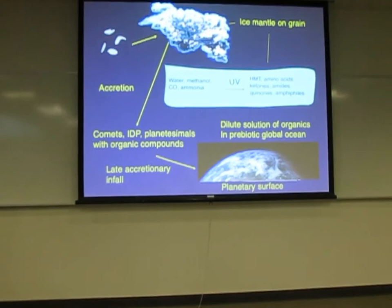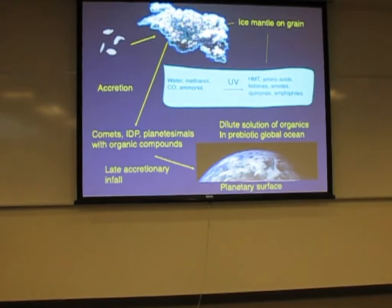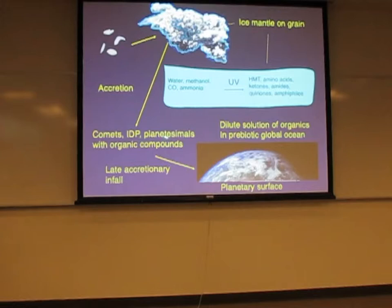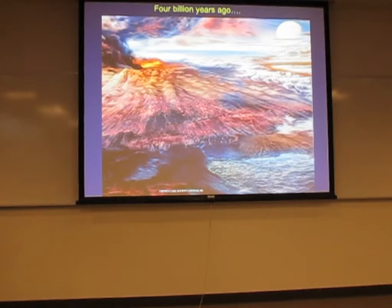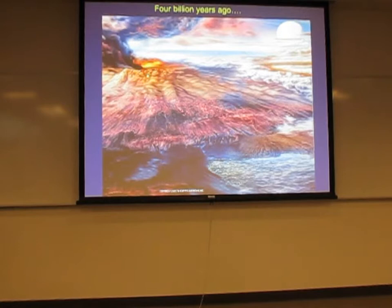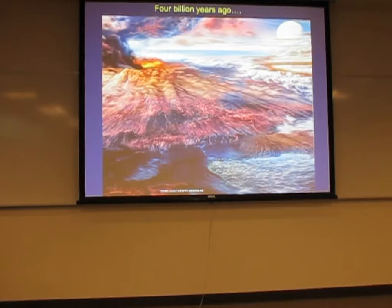To summarize: dust particles have ice on them; the particles accrete into small objects like comets and planetesimals, which are asteroids. You have this late planetary accretionary infall, and that gives a dilute solution of organics in the prebiotic global ocean. That's about the time that life can begin, when you finally have liquid water. Here's an artist's version of what the Earth was like 4 billion years ago, before life started: a volcanic Earth, something like Hawaii today. We have oceans, no doubt about that, and since there was precipitation, freshwater ponds as well — so we're not stuck with a marine origin of life.